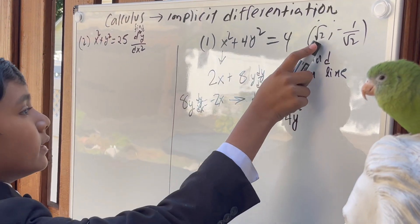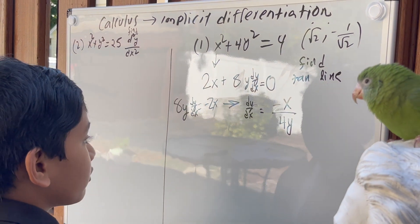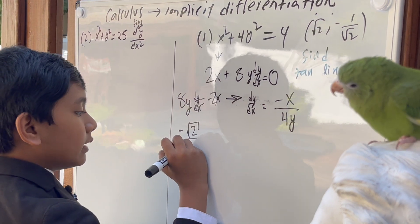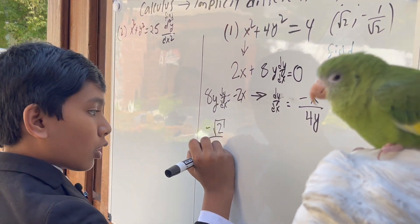Now, we plug in √2 and -1/√2. So, -√2 over -4/√2.